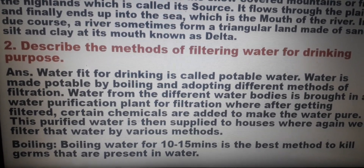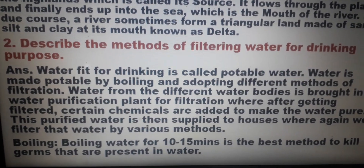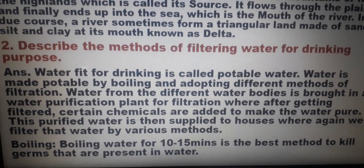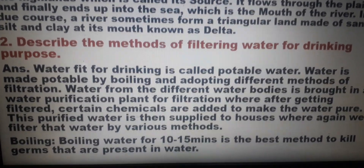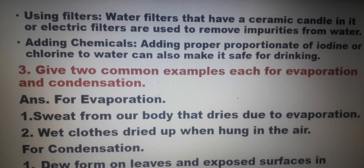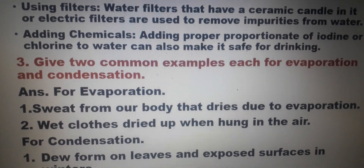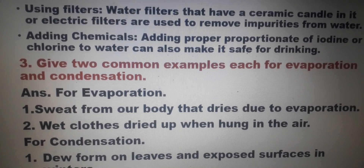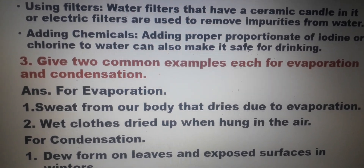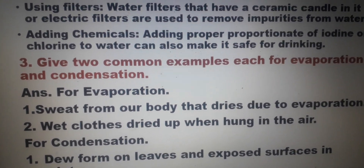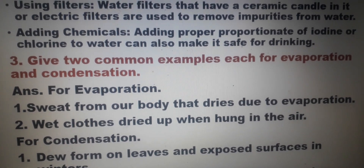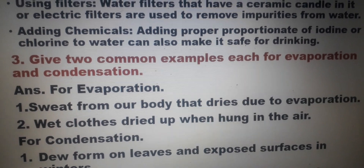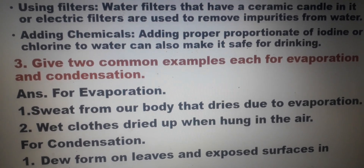The first method is boiling. Boiling water for 10–15 minutes is the best method to kill germs present in water. The next method is using filters — water filters that have a ceramic candle in them, or electric filters, are used to remove impurities from water. Next is adding chemicals: adding a proper proportion of iodine or chlorine to water can also make it safe for drinking.